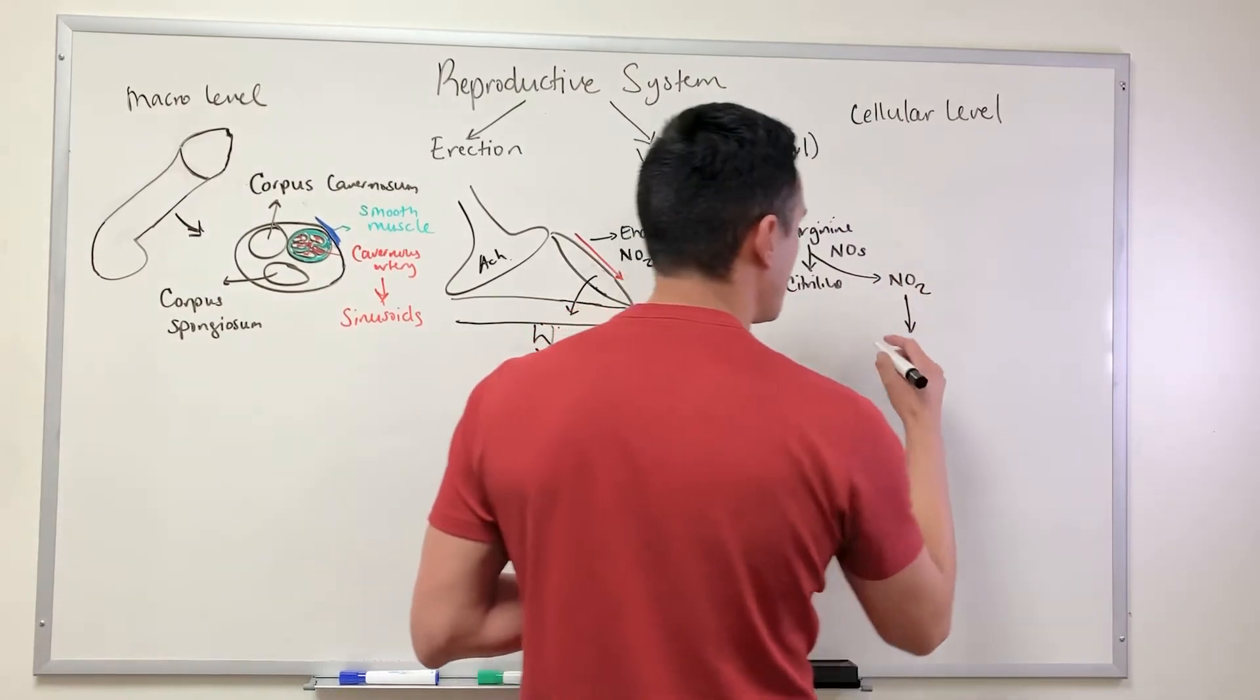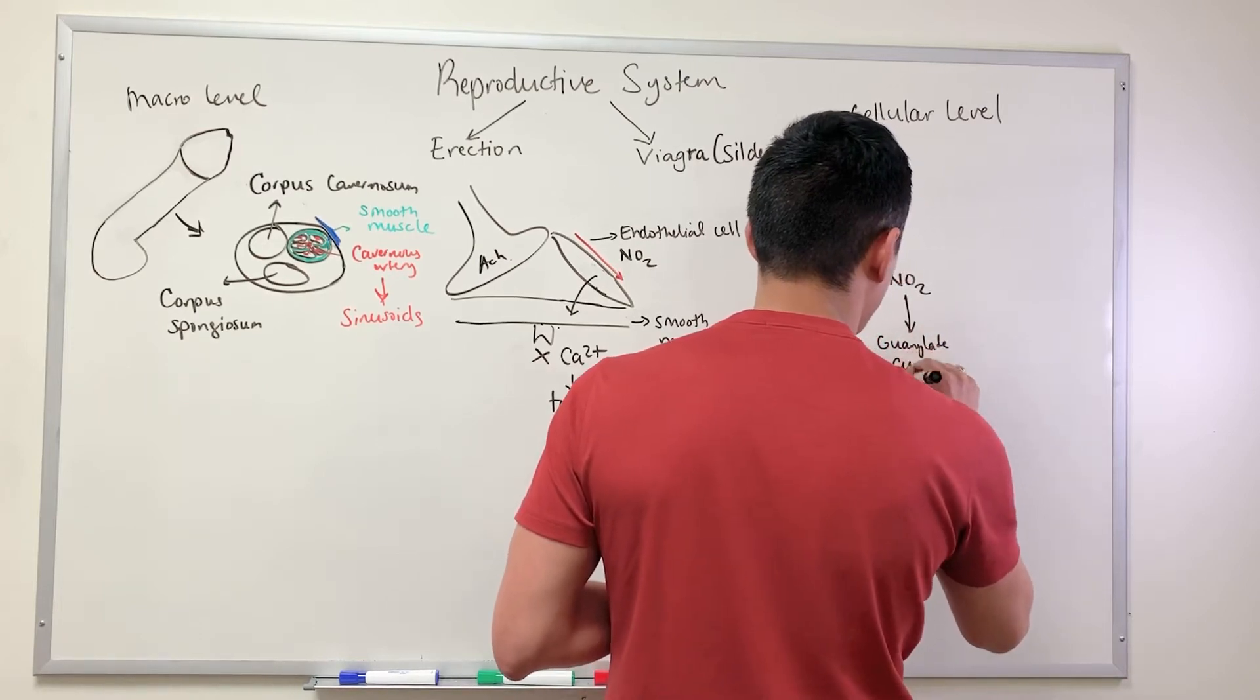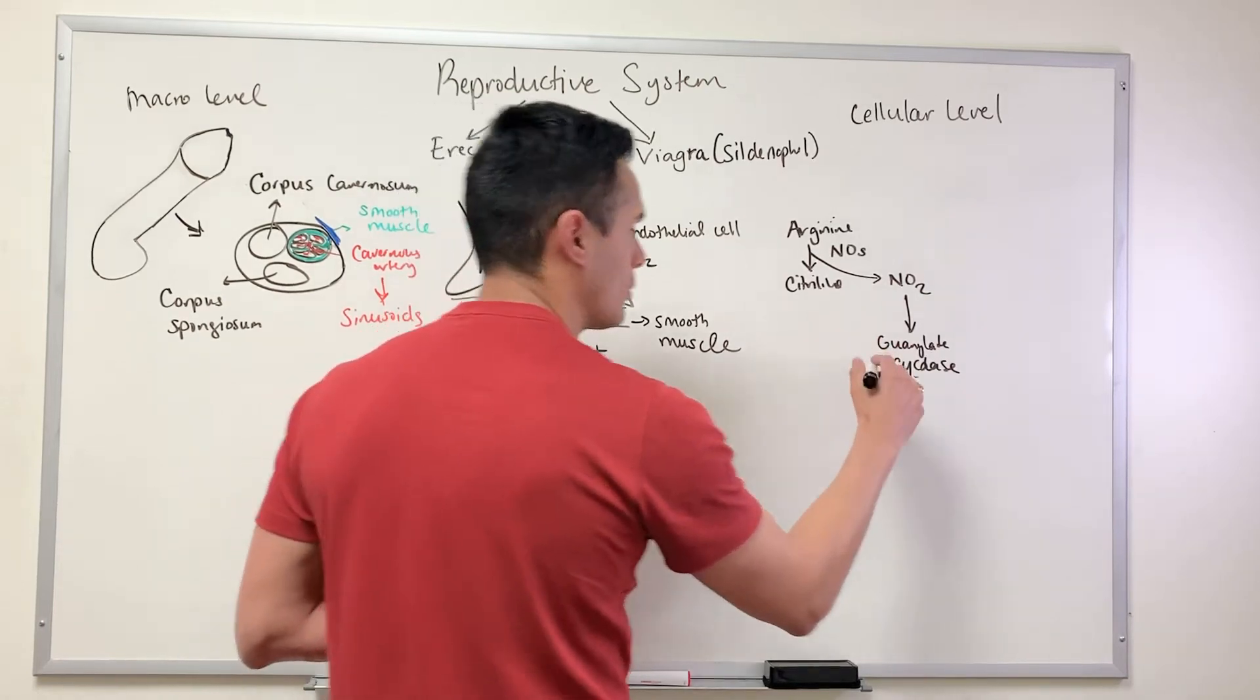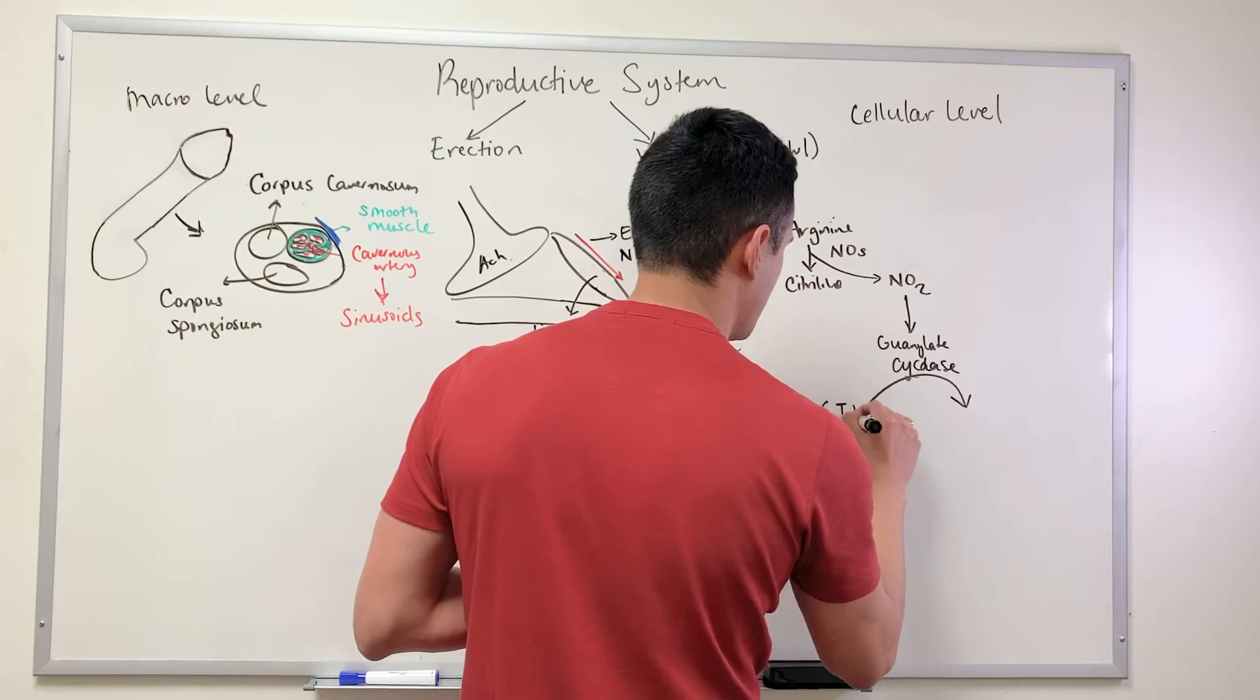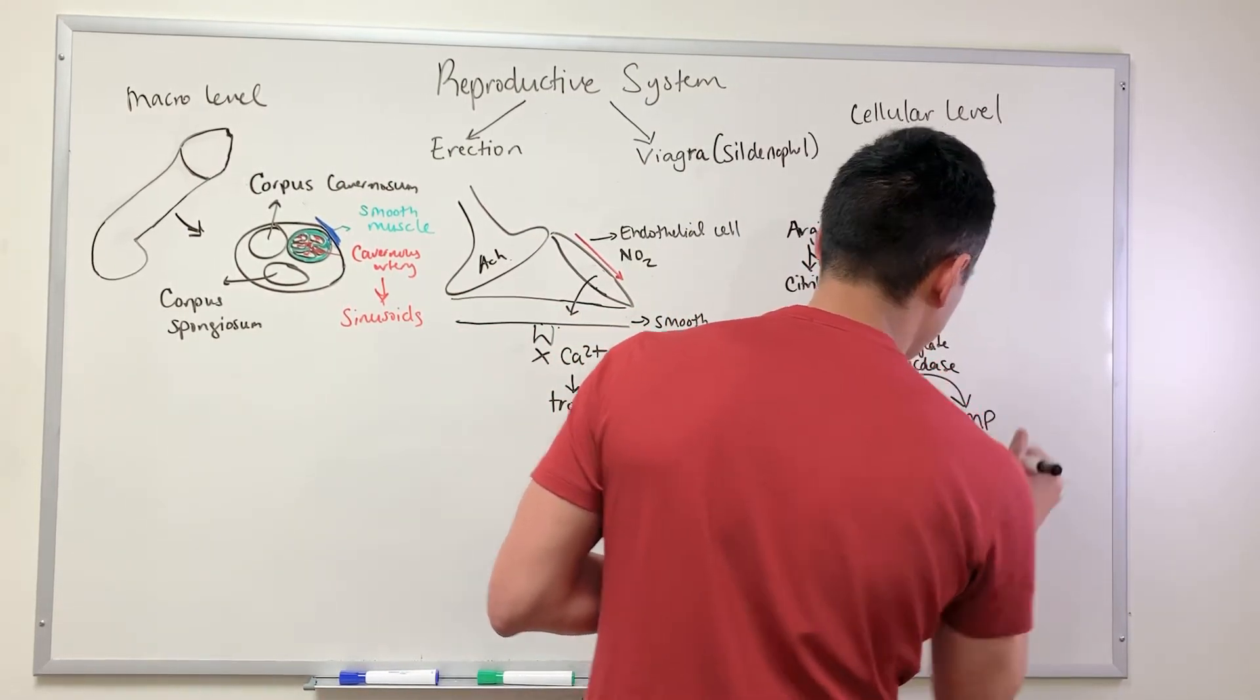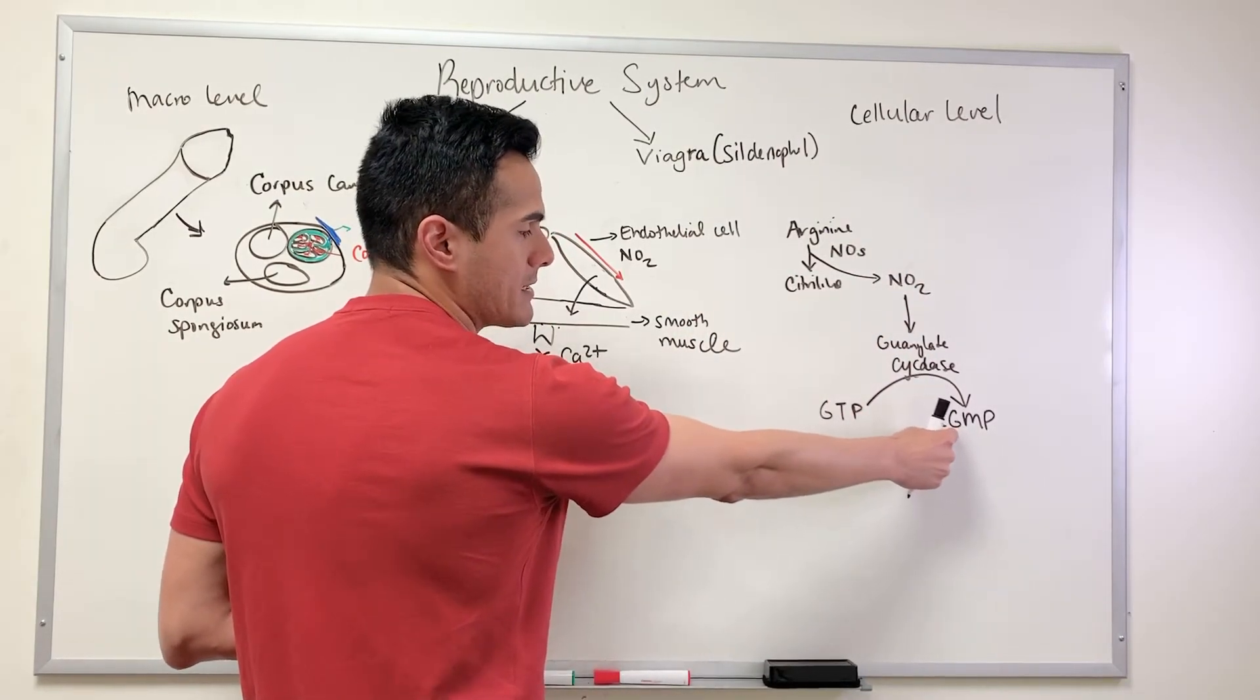Nitric oxide targets an enzyme known as guanylate cyclase. Once it binds here to guanylate cyclase, we convert guanosine triphosphate into cyclic guanosine monophosphate. This here is our secondary messenger.